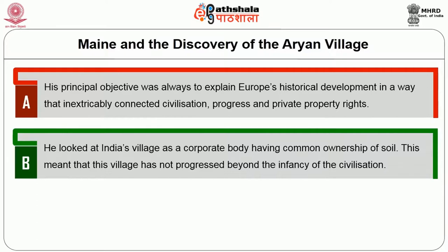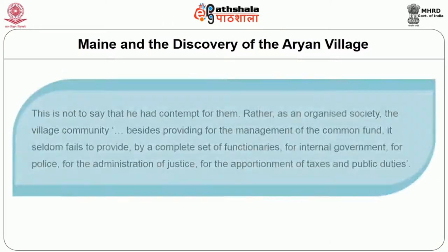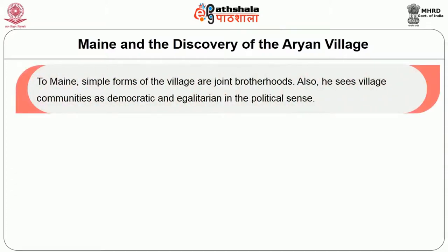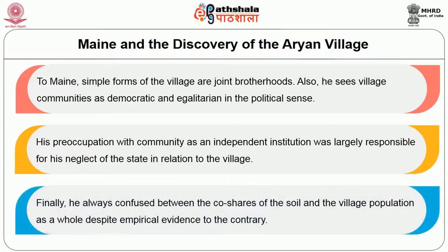Maine looked at India's village as a corporate body having common ownership of soil, meaning the village had not progressed beyond the infancy of civilisation. He treated them as survivals from the Indo-European past, evocative of Roman gens, since co-ownership of soil marked the infancy of law and civilisation. As an organised society, the village community provided for management of the common fund, internal government, police, administration of justice, and apportionment of taxes. He saw village communities as democratic and egalitarian in the political sense, and always confused between the owners of the soil and the village population as a whole.